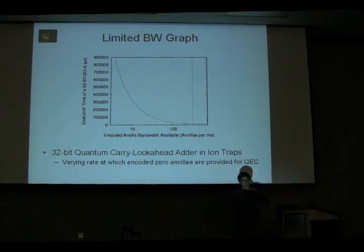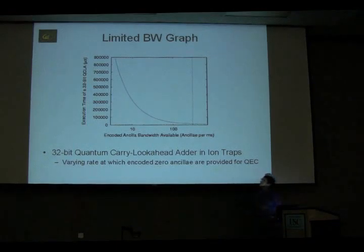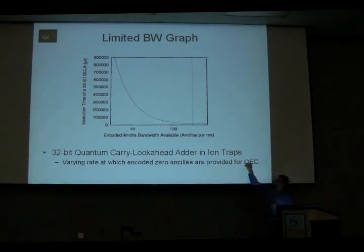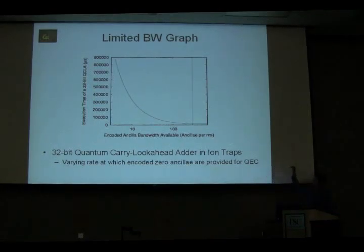Let's take a closer look at this time-hardware trade-off. We took a realistic circuit, a 32-bit quantum carry look-ahead adder — a quantum circuit that adds two 32-bit numbers. In order to get some latency estimates, we've been working with ion traps. The idea is we imagine a magical box, a generator, which outputs encoded zero ancilla at some constant rate. They are consumed as the logical circuit is running by the most critical data first.